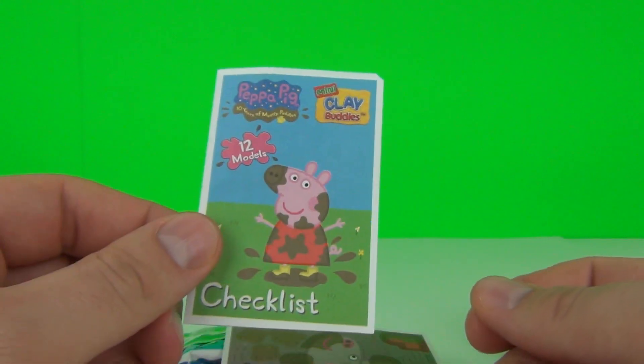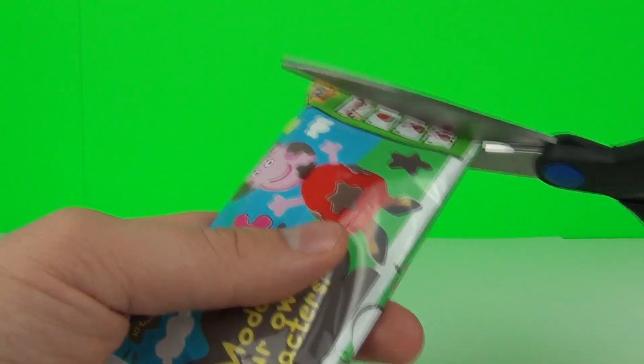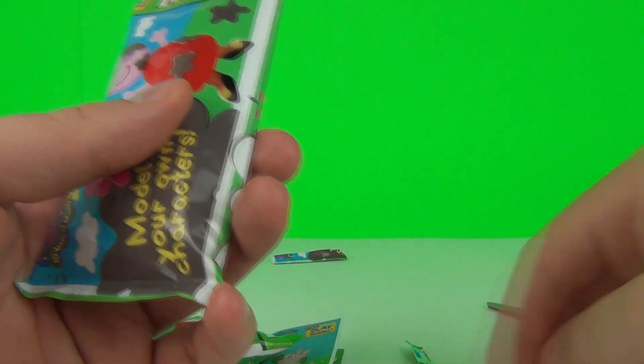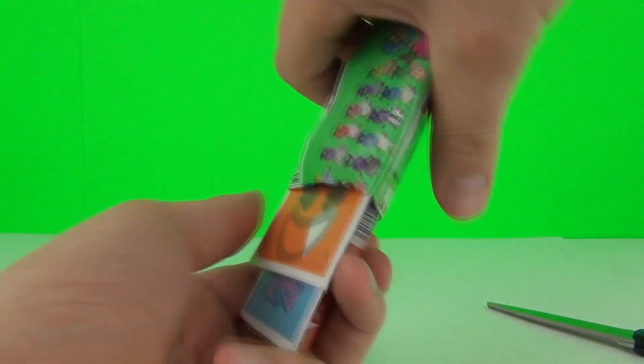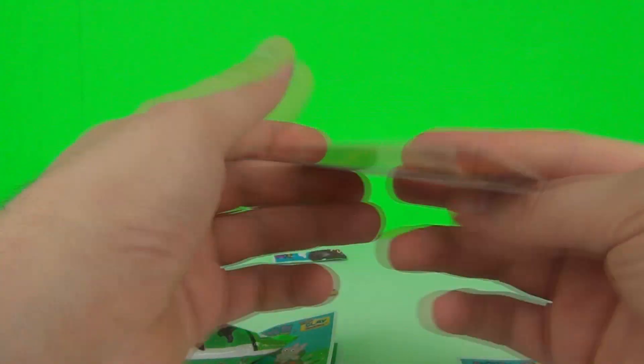So let's have a look at the other bag and see who we get and then we can get to building them. Let's hope we do get two different characters. I'm sure we will and we do. So there you go. There we have all the contents of the bags. We have a different character this time.